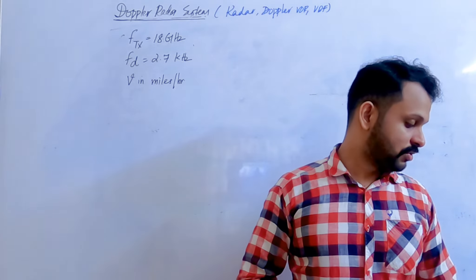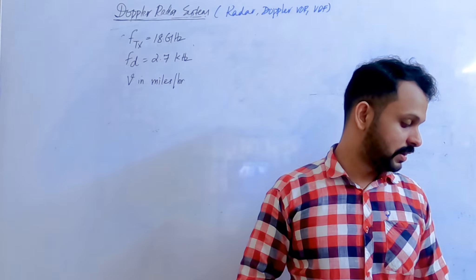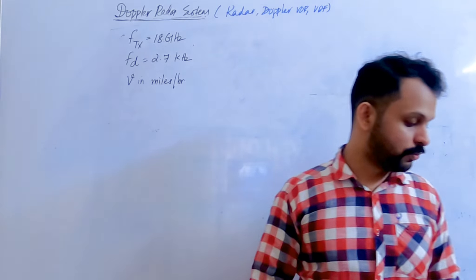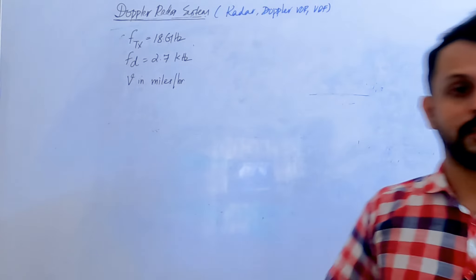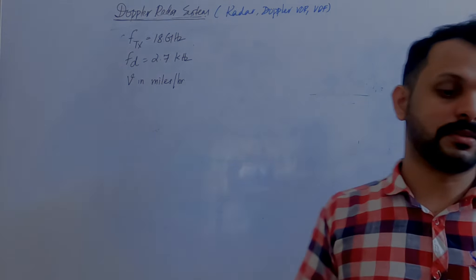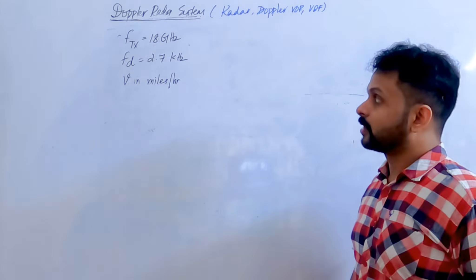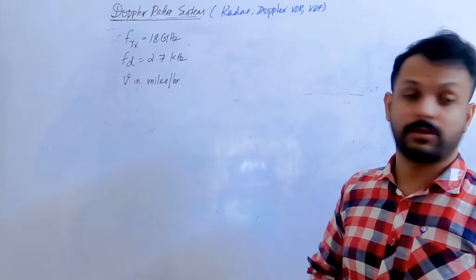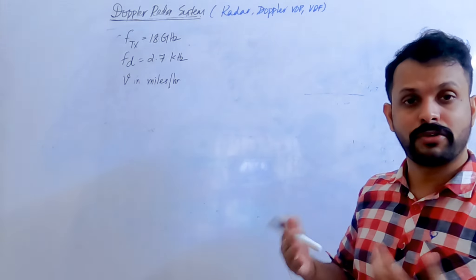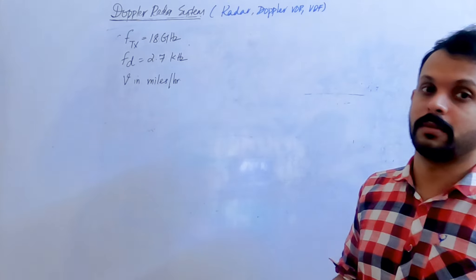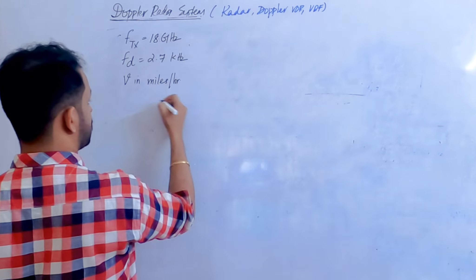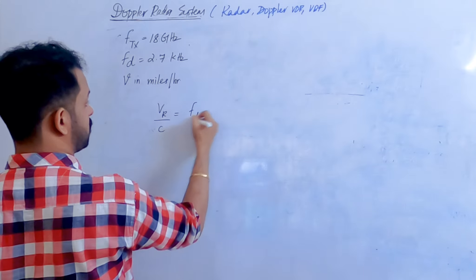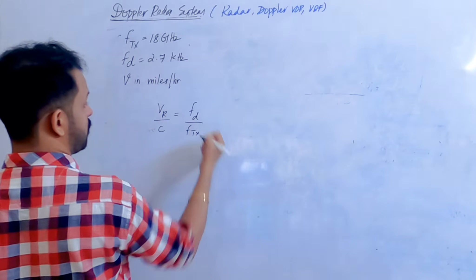The frequency shift observed at a stationary receiver from an object transmitting at a frequency of 18 gigahertz is 2.7 kilohertz. What is the speed of the object in miles per hour? We use the same equation: relative velocity divided by speed of light equals frequency shift divided by frequency of the transmitter.